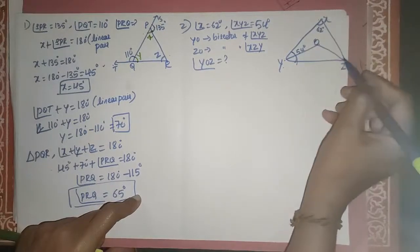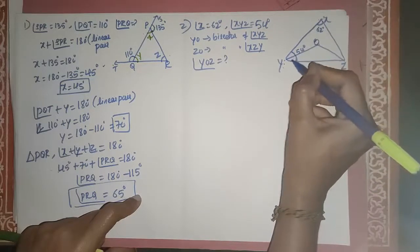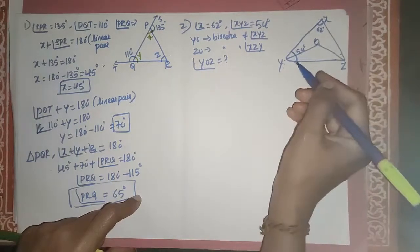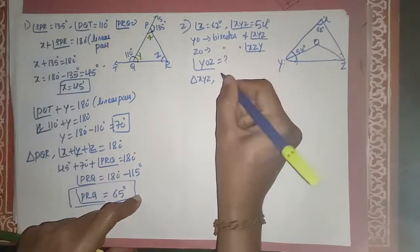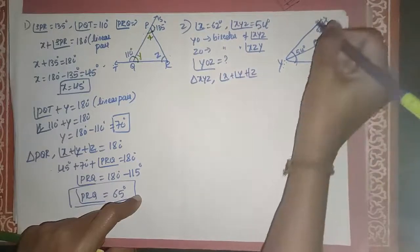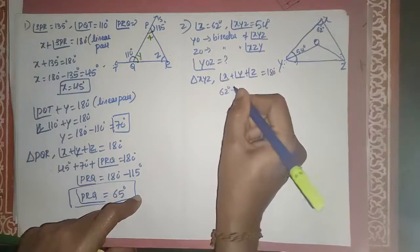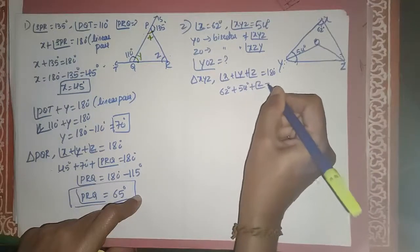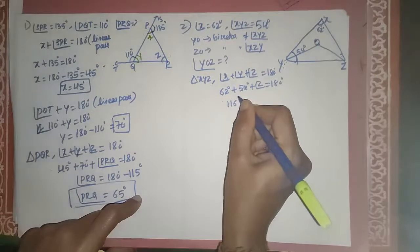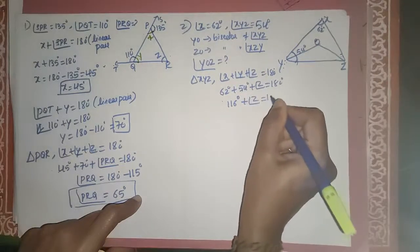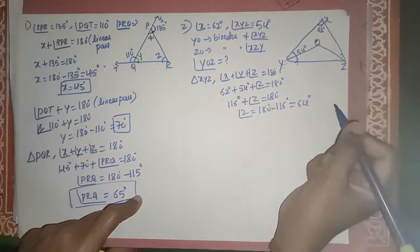First, we find angle Z in triangle XYZ. Angle X plus angle Y plus angle Z equals 180 degrees. Angle X is 62 degrees and angle Y is 54 degrees. So 62 plus 54 equals 116 degrees, and angle Z equals 180 minus 116, which gives angle Z equals 64 degrees.